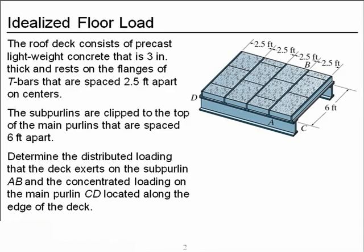Here's the problem we're going to work with. We have a roof deck consisting of precast lightweight concrete, 3-inch thick panels. Those panels rest on the flanges of T-bars, we'll call those the sub-purlins, and they're spaced 2.5 feet on centers. Those sub-purlins are clipped to the tops of the main purlins, and those main purlins are spaced 6 feet apart. Member CD is a main purlin, member AB is one of the sub-purlins. We want to determine the distributed loading that this deck exerts on the sub-purlin AB and the concentrated loading on the main purlin CD located along the edge of the deck.